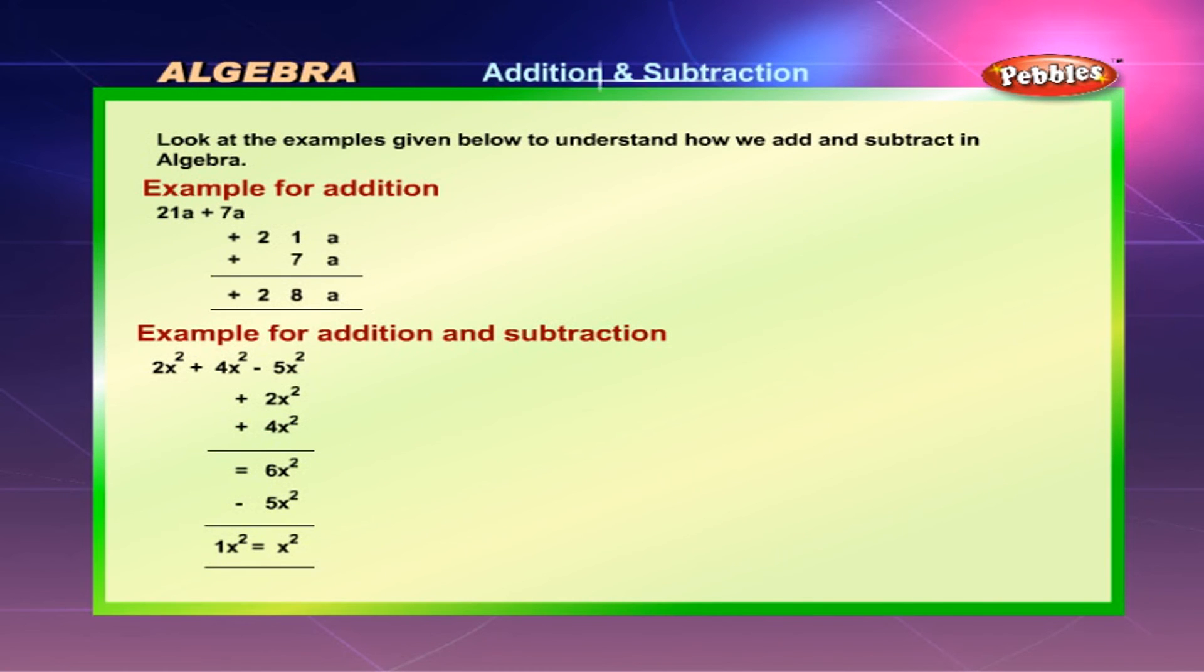Look at the examples given below to understand how we add and subtract in algebra. Example for addition: 21a + 7a = 28a.